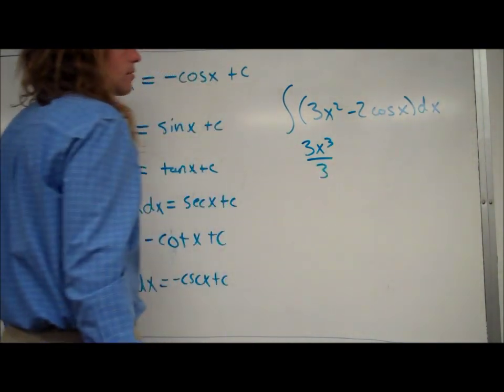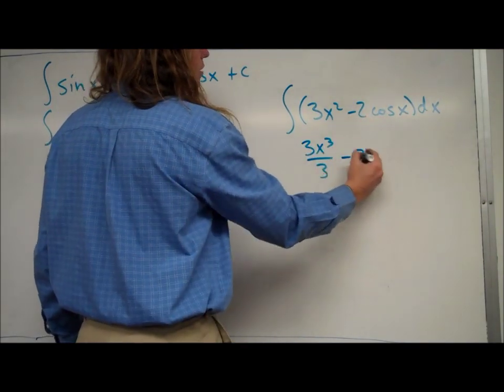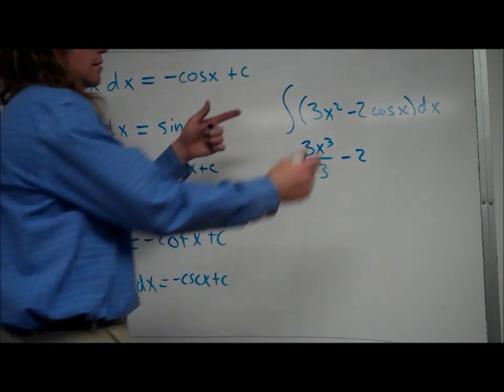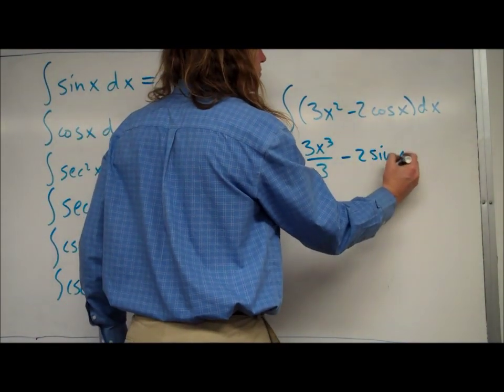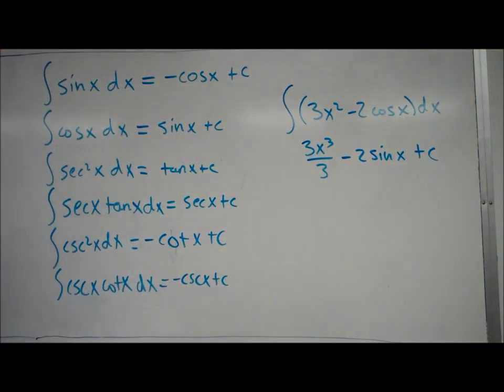Just like with the power rule, those constants go along for the ride. In this case, that constant in front of cosine is just going to go along for the ride. The antiderivative of cosine is just sine. And I don't think I mentioned before, but notice the dx, when you take the antiderivative, just does go away.